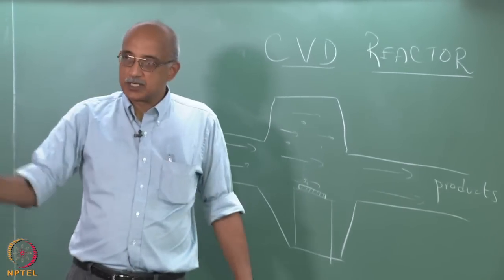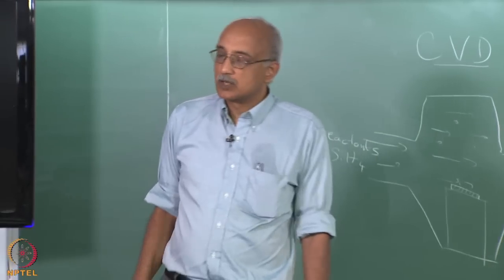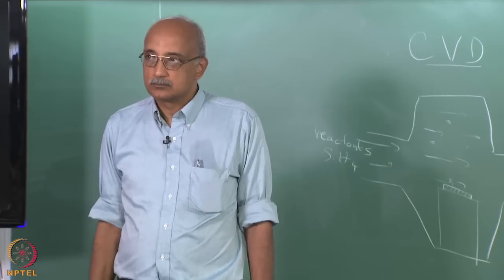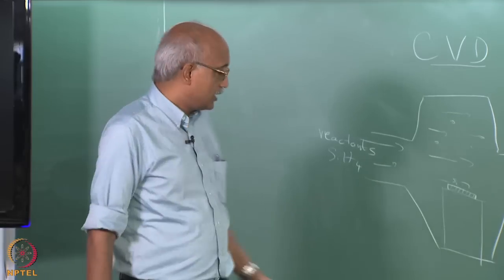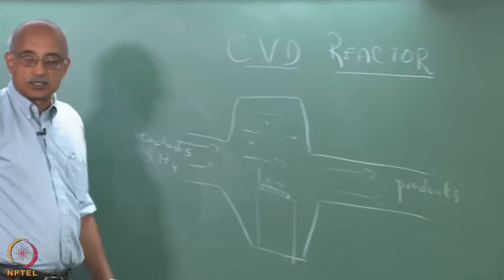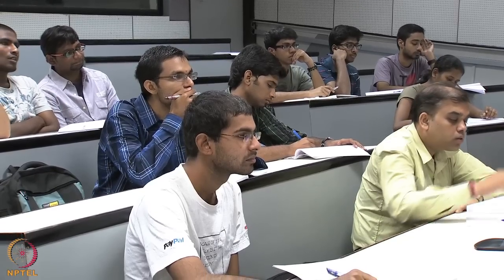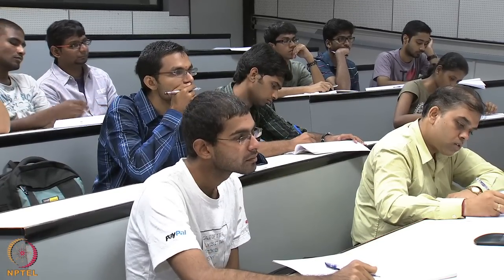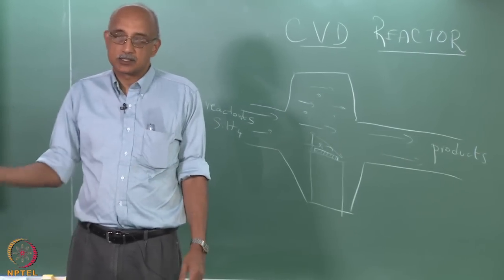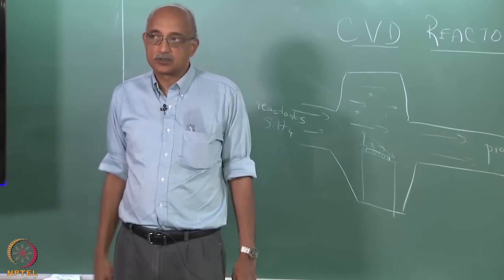Concentration varies as the reactants flow across the substrate. The concentration of silane will be quite large when it first encounters the substrate, but some of it deposits, so the precursor concentration starts decreasing as gases flow across. You will get a very thick deposit at the leading edge, but towards the trailing edge you will see a reduction in thickness, which is not good.